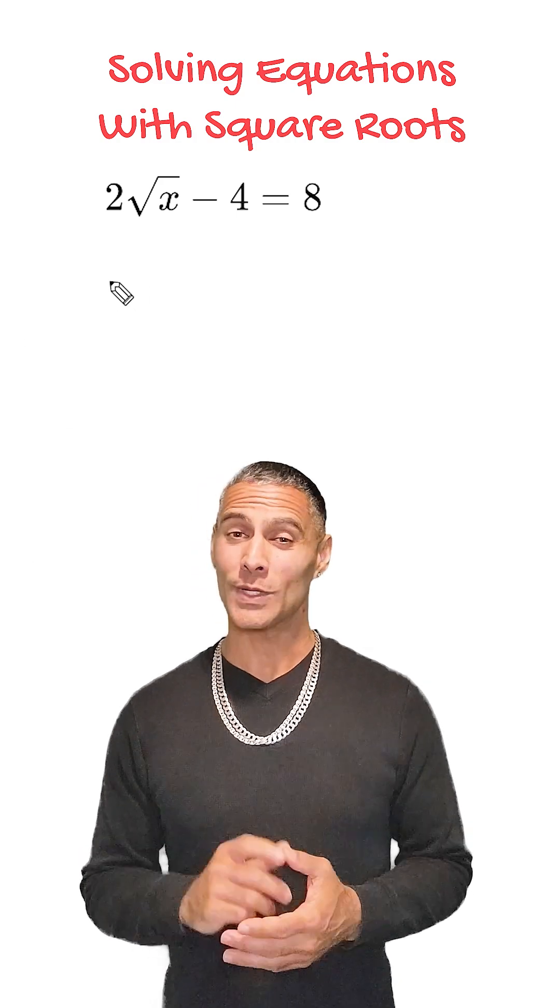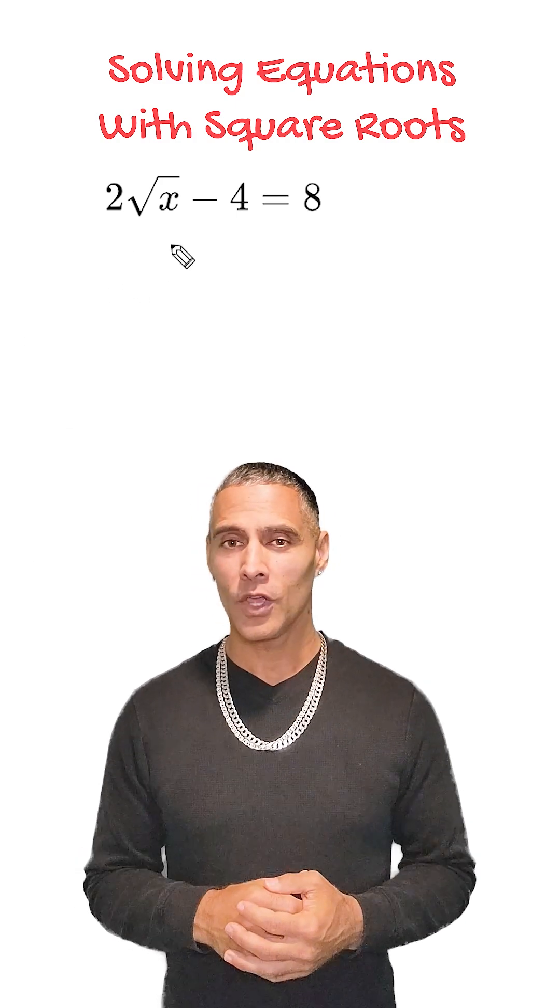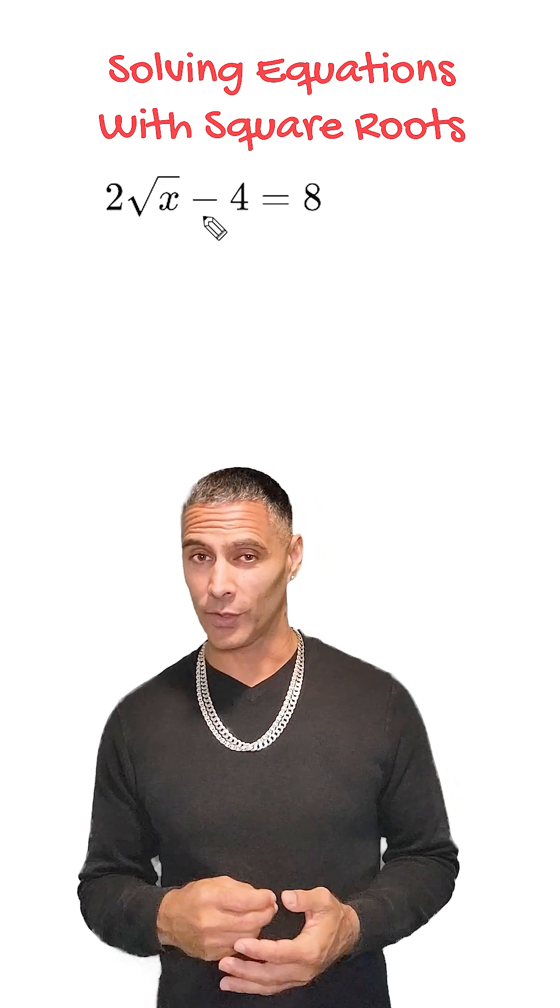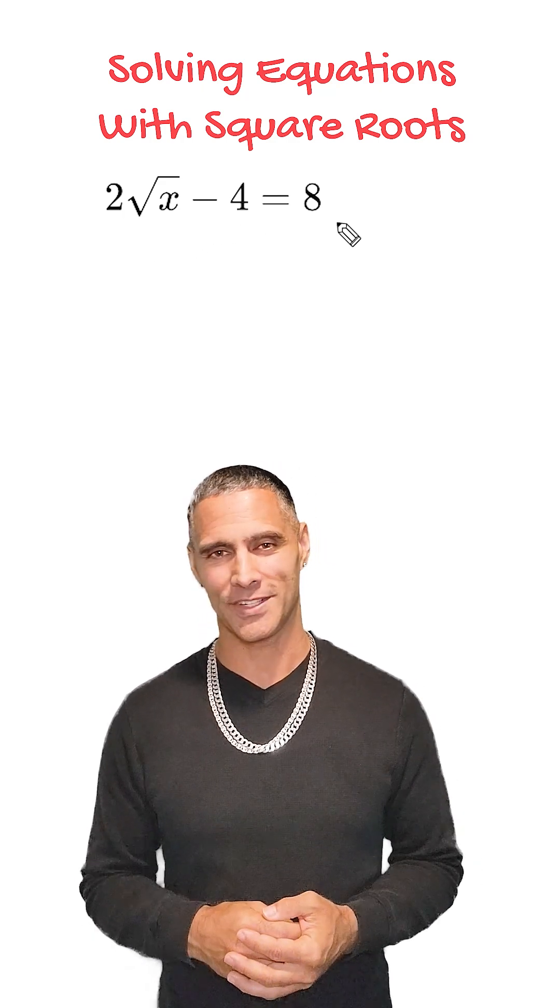The first thing we need to do is isolate the term with the square root, which is 2 times the square root of x. To do this, we will move the constant term, which is negative 4, to the other side of the equation.